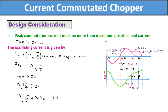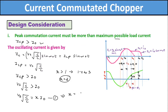X is always greater than 1 and varies in the range 1.4 to 3; the desirable value of X is equal to 2. Here I0 is the maximum possible load current that the commutation circuit has to handle. From equation 1 we can write X = ICP / I0. Let this be equation number 2.